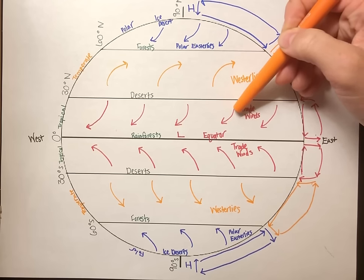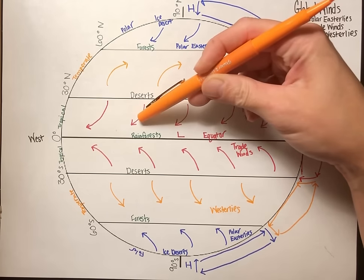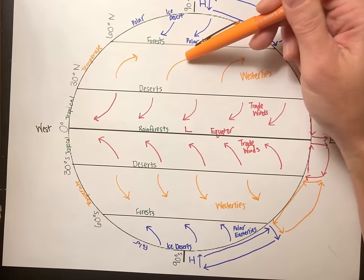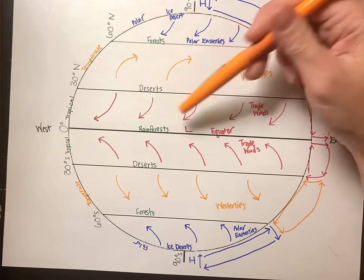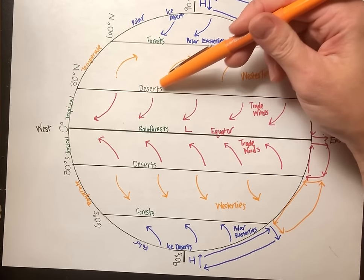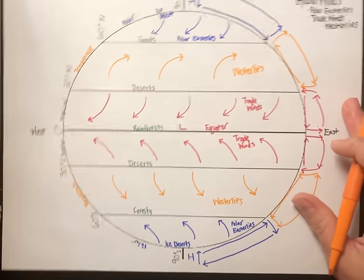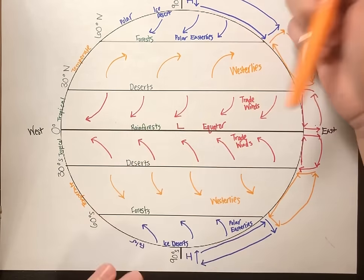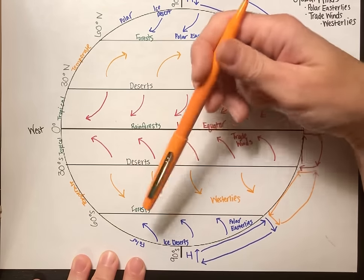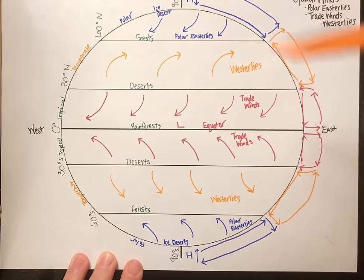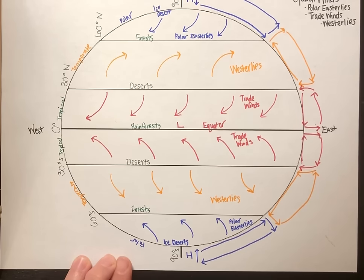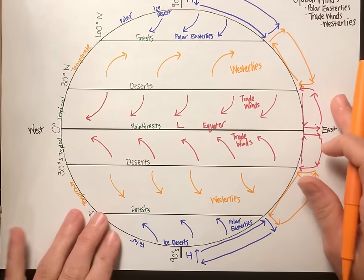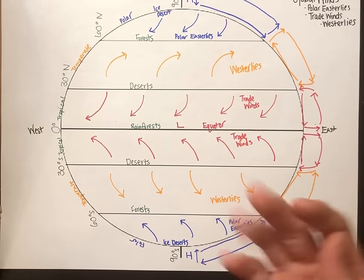Trade winds will carry hurricanes from off the coast of Africa all the way to North and South America. Westerlies are also going to take warm air from further south all the way to Europe. So those are our global winds: polar easterlies, westerlies, and trade winds. You also have nature patterns formed from them: ice desert, forest, desert, forest, desert, forest, ice desert. Look at a map of Earth — see where you have greens and tans and whites — and you'll know it's because of the uneven heating of the Earth and our rotation.